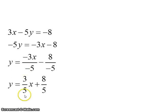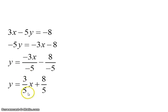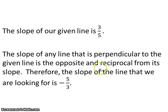All we need from this is the slope — we do not use this y-intercept. I see a lot of students try to work it into the problem, but it gives us no extra information. The slope of the given line is 3/5. Any line perpendicular to it will have the opposite and reciprocal slope, which is negative 5/3. So we're halfway there — our perpendicular slope is -5/3.